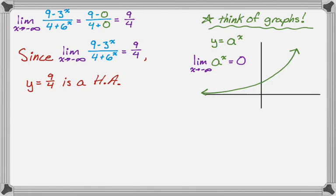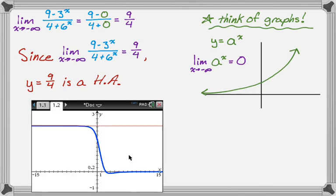So this function actually has two horizontal asymptotes. Everyone pretty much forgets to go to negative infinity, which is why it's kind of a tricky question. But it's not really tricky — you just have to remember: if you're not dealing with a rational function, you have to consider both infinity and negative infinity. Rational functions can only have one horizontal asymptote. Looking at the graph on my calculator, you can see it does have two horizontal asymptotes. I hope you found this helpful, and good luck.